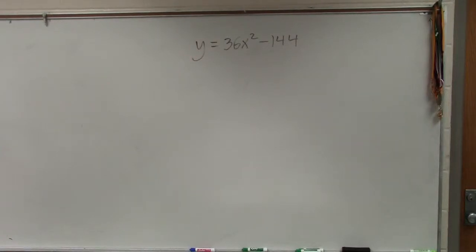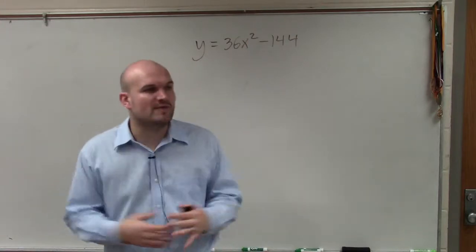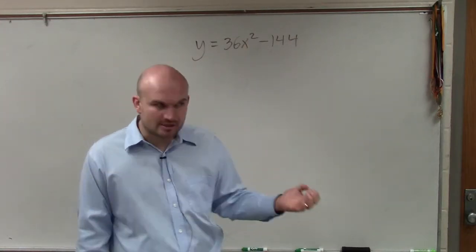In this example, we have y = 36x² - 144. We know that our middle term b, the bx, is equal to 0.